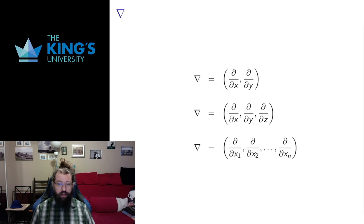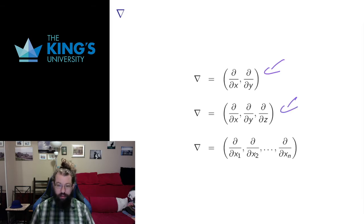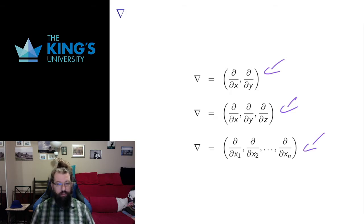All of these depend on the operator NABLA, this upside-down triangle. I defined this in Calculus 3 and used it to define the gradient. NABLA is a vector of partial differential operators. In R2, it is the vector of the operator partial in x and partial in y. In R3, we also have partial in z. And in Rn, we have the operator of the partials in all n components, taking the derivative in each variable.